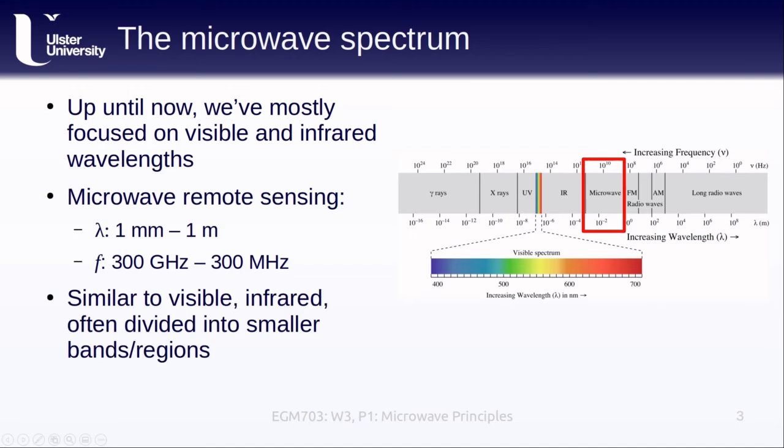Finally, similar to what we've seen for the visible and infrared portions of the electromagnetic spectrum, the microwave spectrum can also be divided up into different bands or regions corresponding to similar enough properties. And we'll see this a bit more next week when we talk about applications of radar remote sensing.